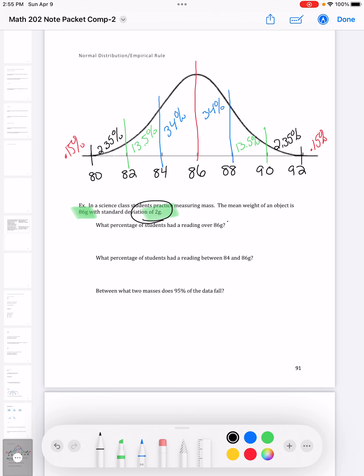I want to know the percent of the students that had a reading over 86 grams. Well, here's 86, and over 86 was going to be more than. So I'm going to go to the right, and I'm going to add all of those percents together. And that's going to give me a total of 50%. And that makes sense because the mean was 86. So the mean in a normal distribution is right in the middle, so half, so it's 50%.